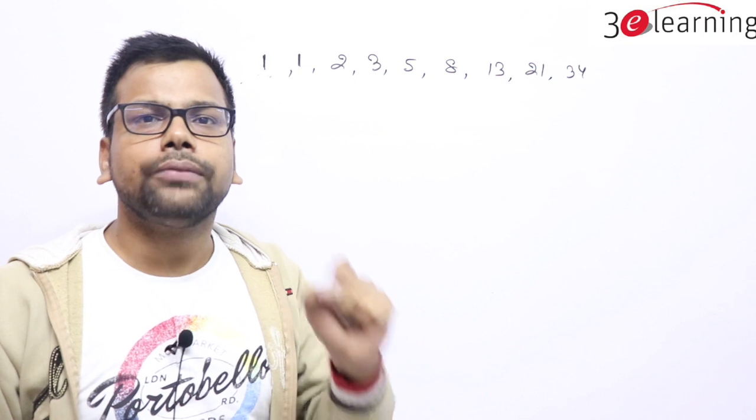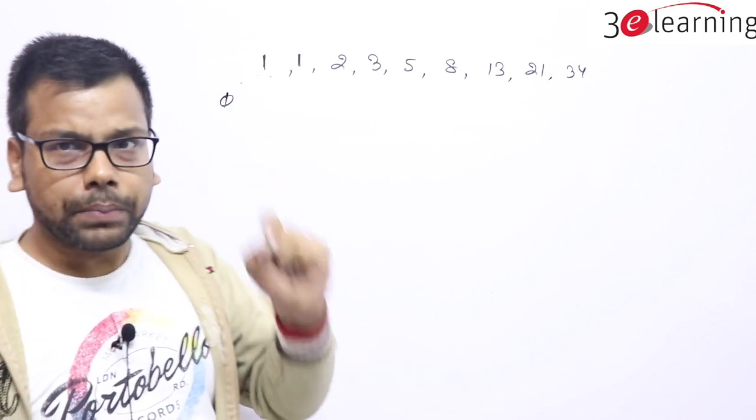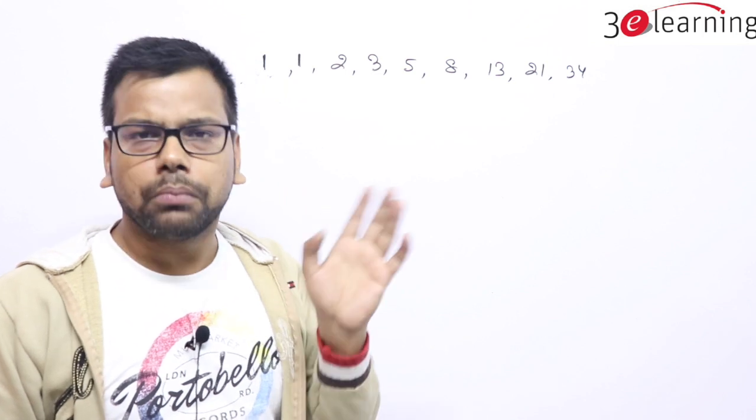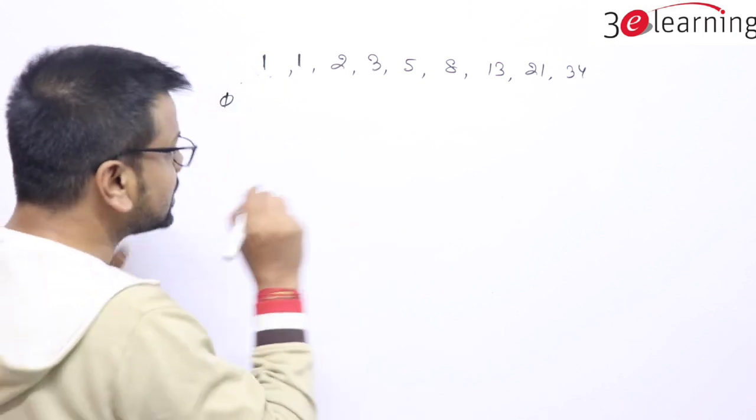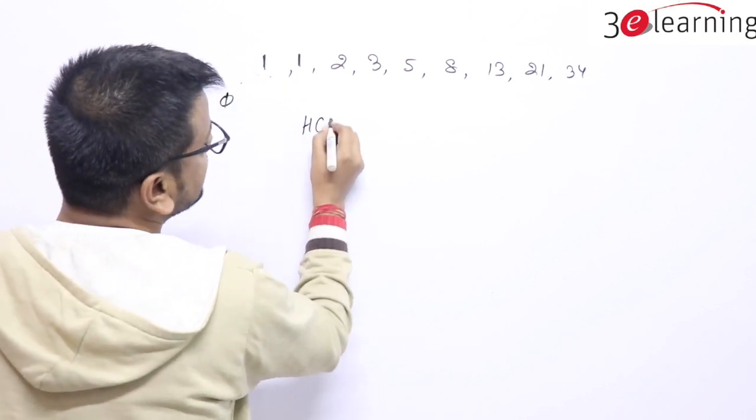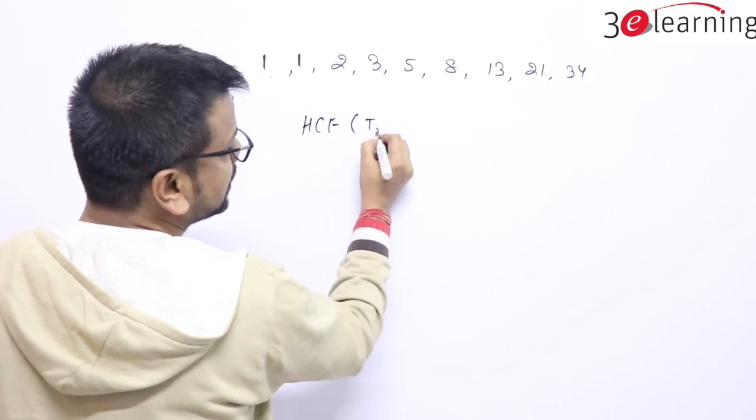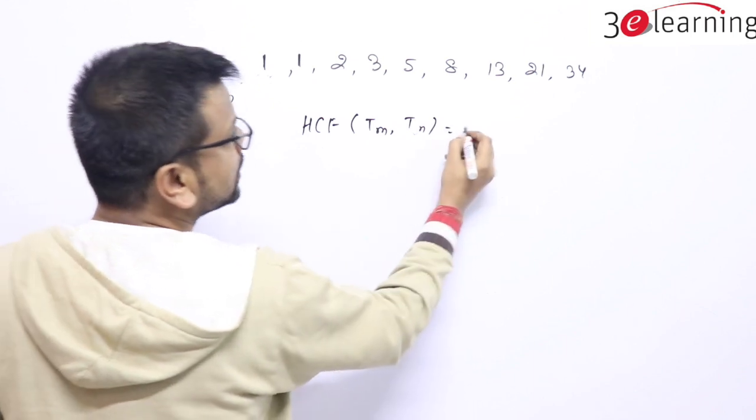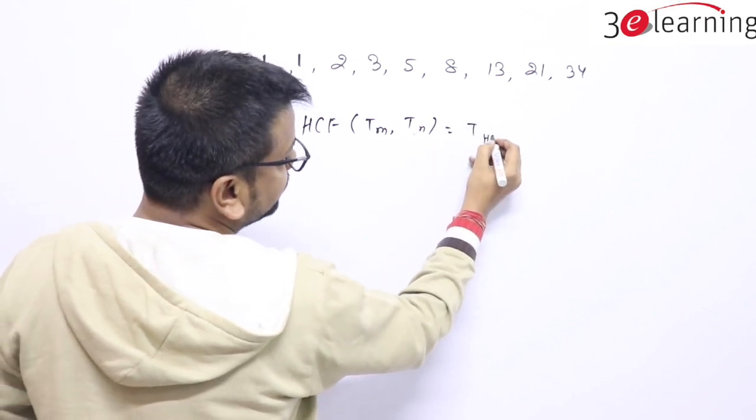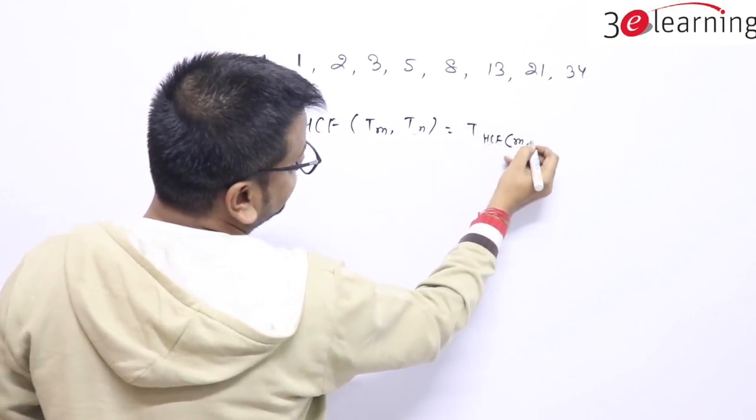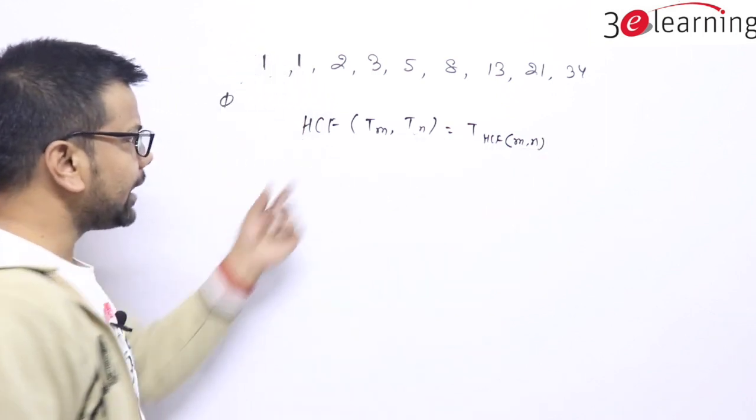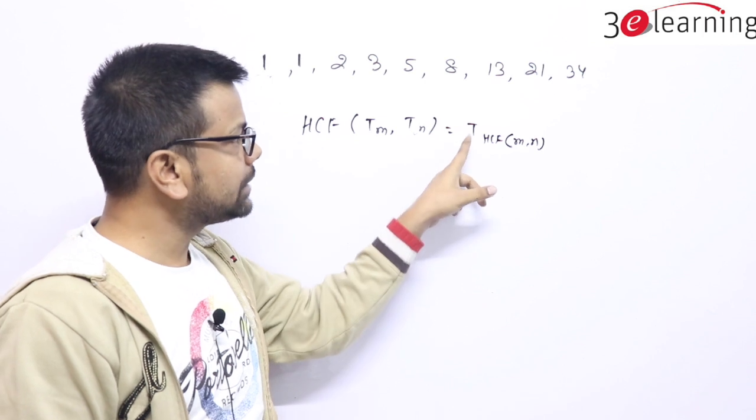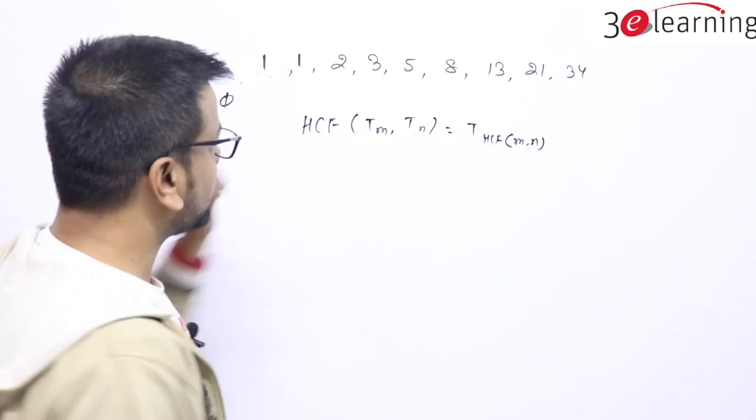This question is part of that research, because you are not able to solve this question without the help of that research. The research states that HCF of the standard Fibonacci sequence, TM and TN of two terms, is nothing but the term itself which has the same HCF common. HCF of TM and TN is nothing but the term which has the HCF of m and n.